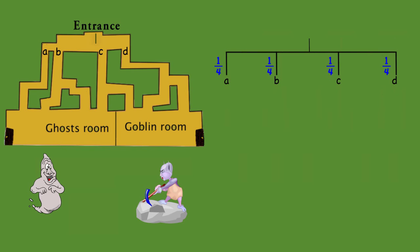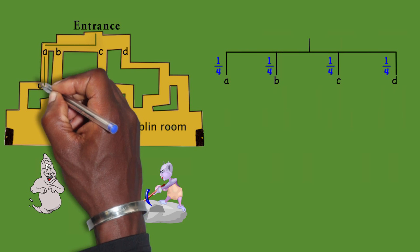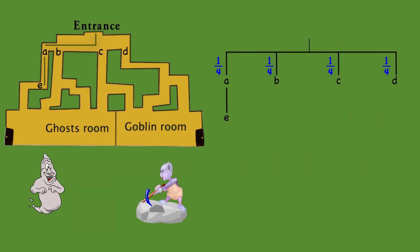Now, if you choose path A, you must go left. So I will label path E. And you have a 100% or 1 out of 1 chance you must choose path E. And path E leads you to the ghost room.